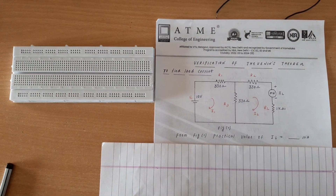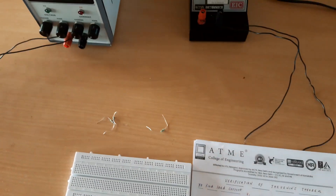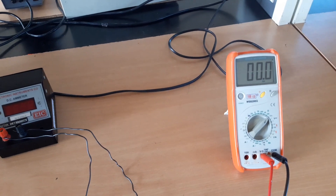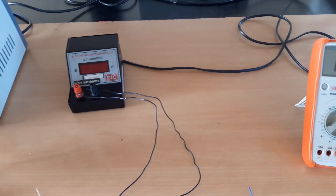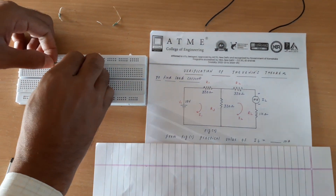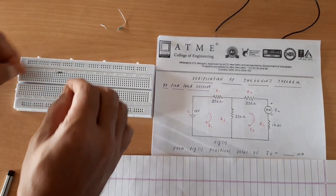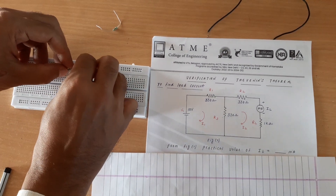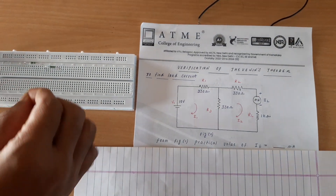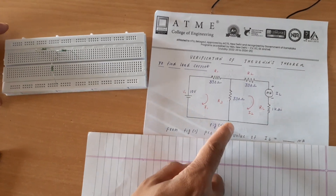I have a breadboard with me and I have three 330 ohm resistors, a power supply, a milli ammeter, and a multimeter. I will connect a 330 ohm resistor — that is R1 — and along with that I am also connecting another 330 ohm resistor, that is R2. Now taking R3: R1, R2, and R3 share one junction, and the other end of R3 I am directly connecting to the ground terminal.